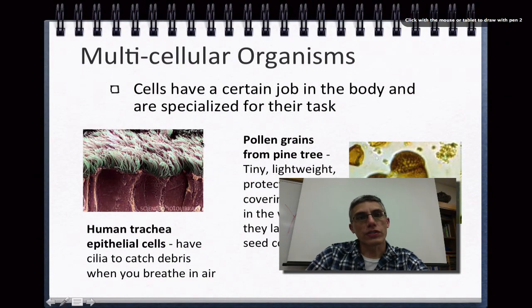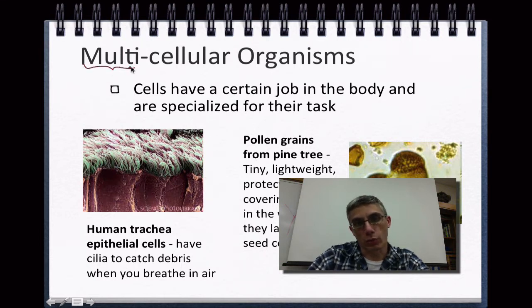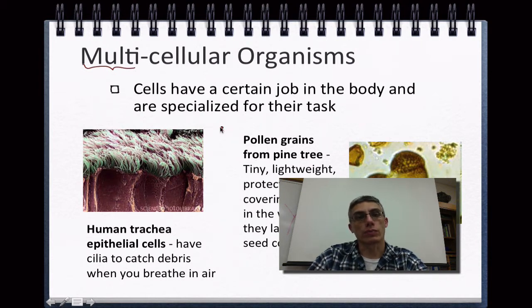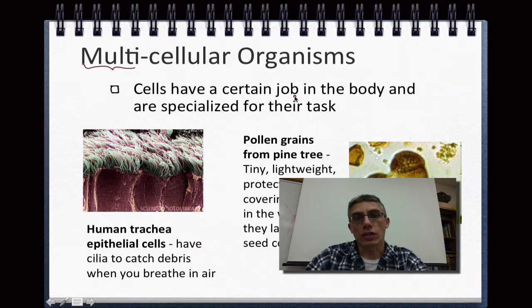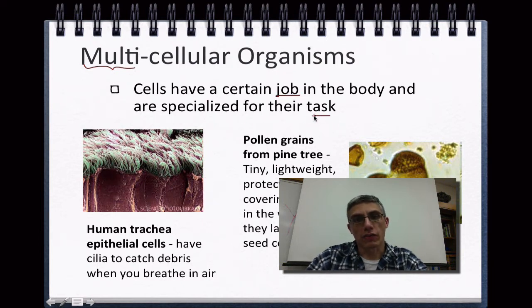Looking at the next slide, we're going to start talking about multicellular organisms. In the previous slide we looked at unicellular or one-cell creatures. Now we're going to be looking at organisms such as ourselves. If you think about us, we are made up of trillions and trillions of cells. We have lots of different types of cells found within our body, and each cell is going to have a specific job — they're going to be very specialized for their task.